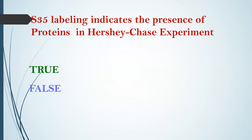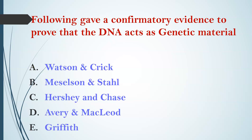Next: S35 labeling indicates the presence of proteins in the Hershey and Chase experiment. The answer is true. S35 labeling is for proteins because proteins contain methionine sulfur — that is why they are labeled with S35.